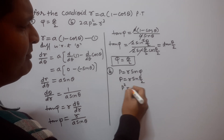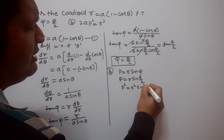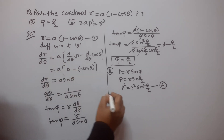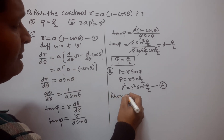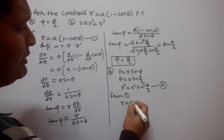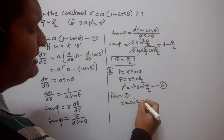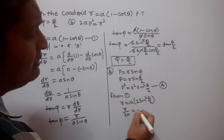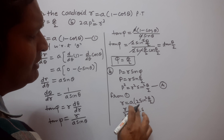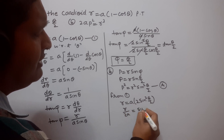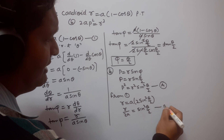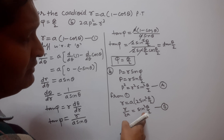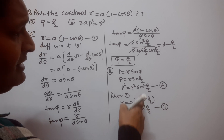Squaring both sides, we get p² equal to r²·sin²(θ/2) — call this equation A. Now from equation 1, r = a(1 minus cos θ), and since 1 minus cos θ can be written as 2sin²(θ/2), we get r/(2a) equal to sin²(θ/2) — call this equation B.